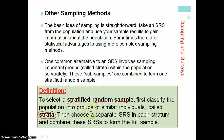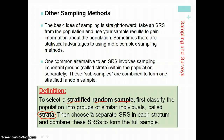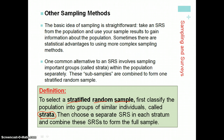For registered voters, your strata might be Democrats and Republicans, selecting an equal number from each. Your strata is usually some categorical variable — gender, grade, age, that type of thing.